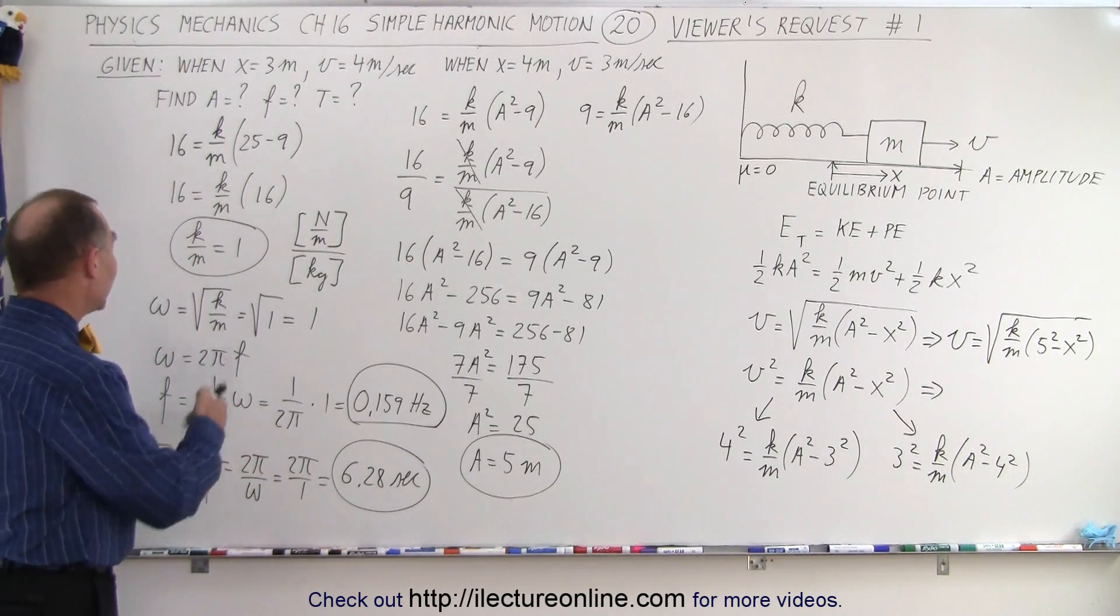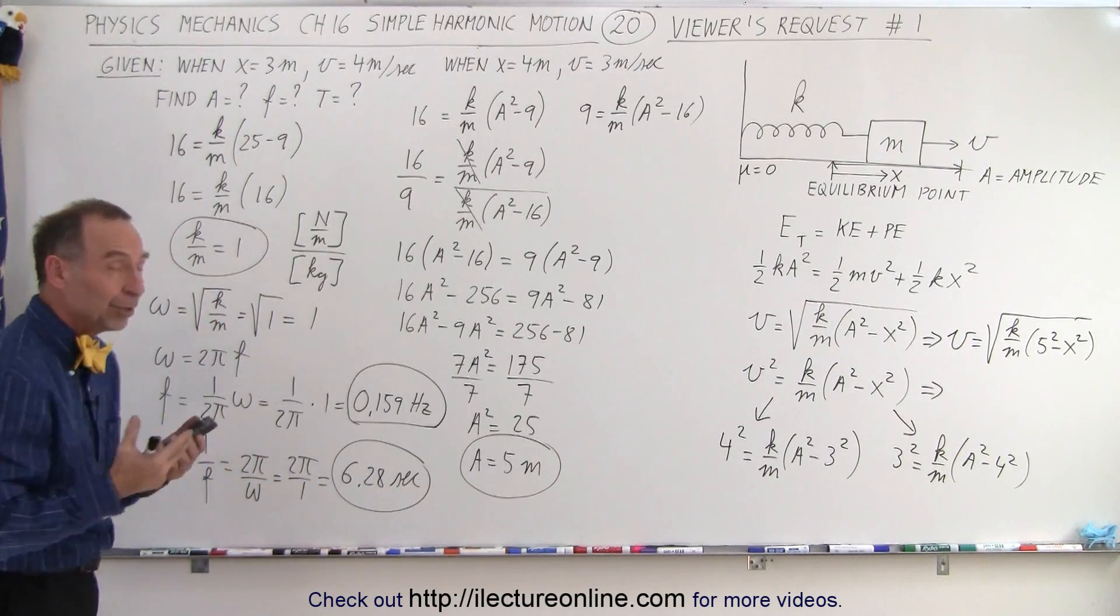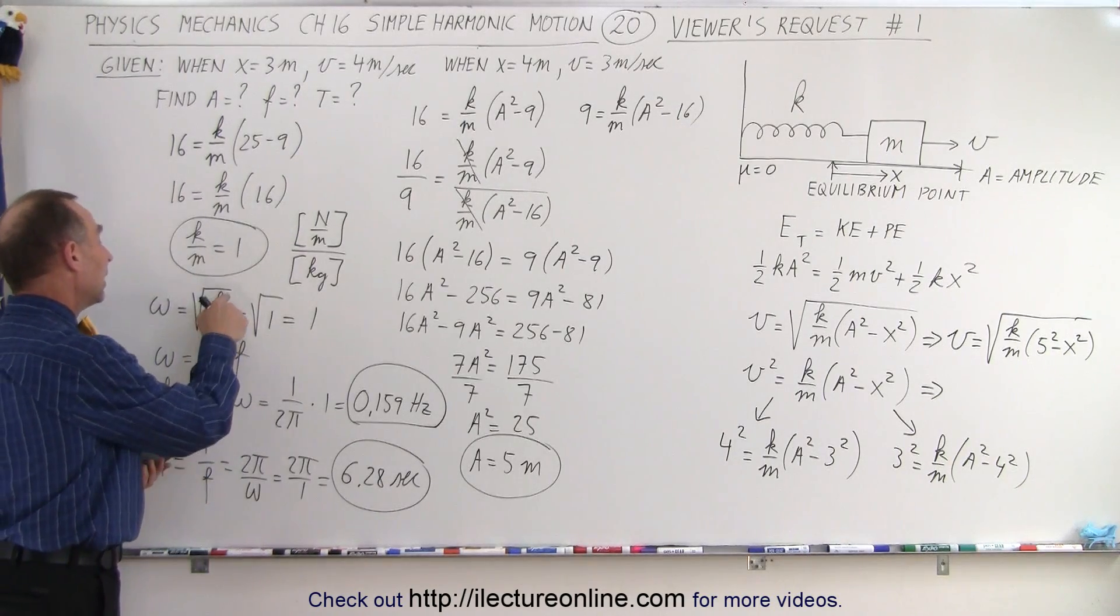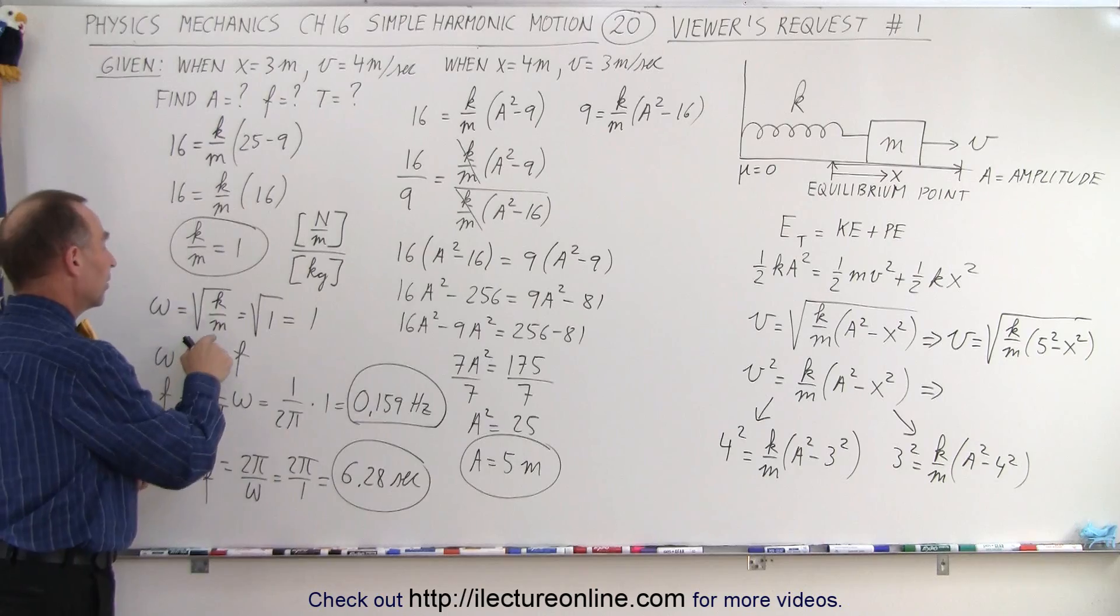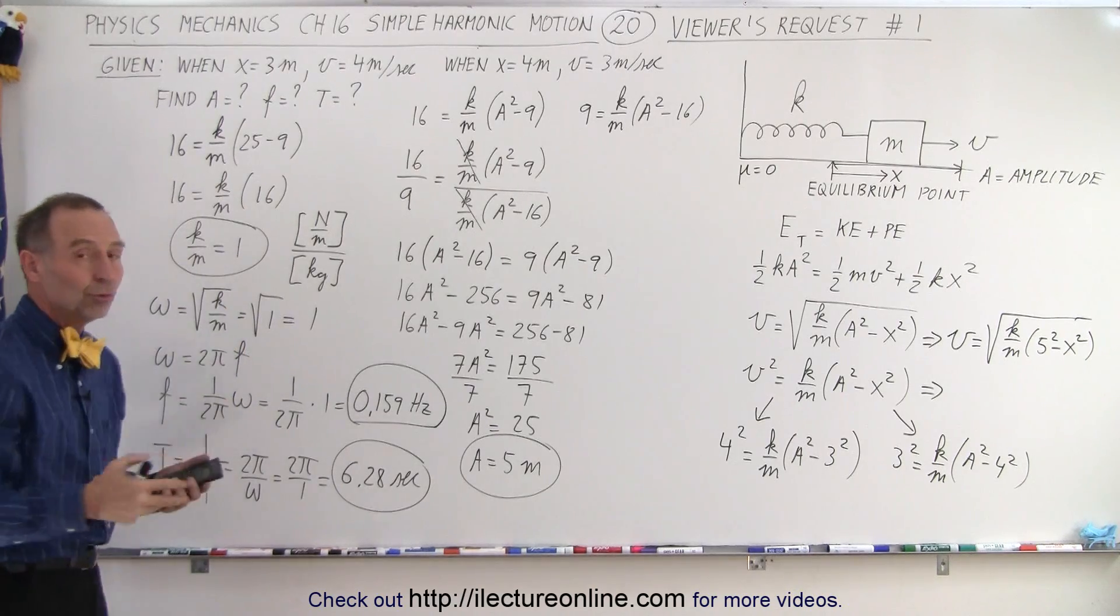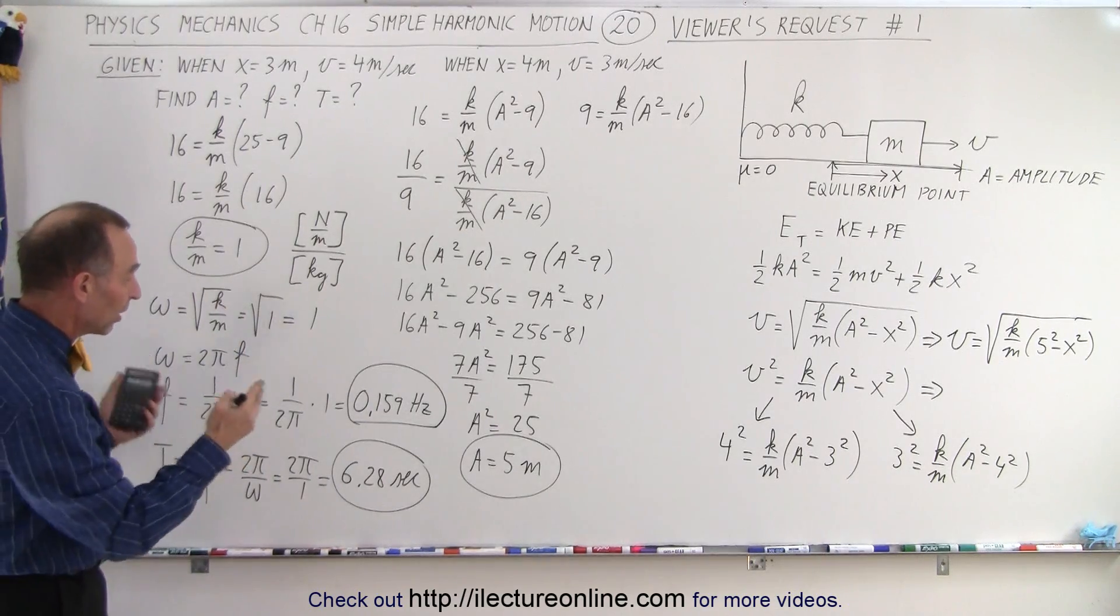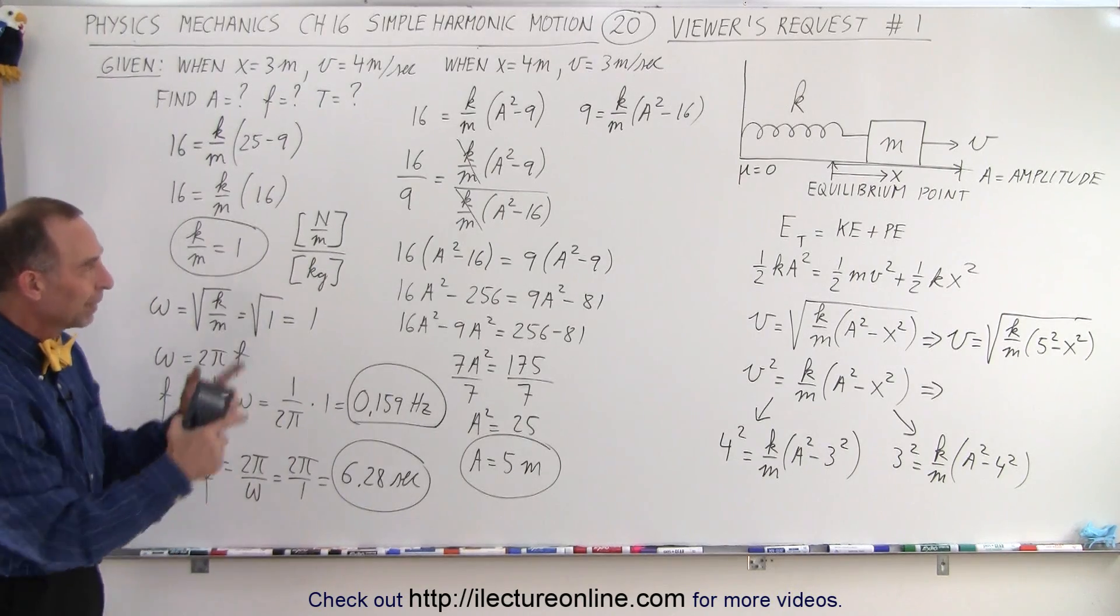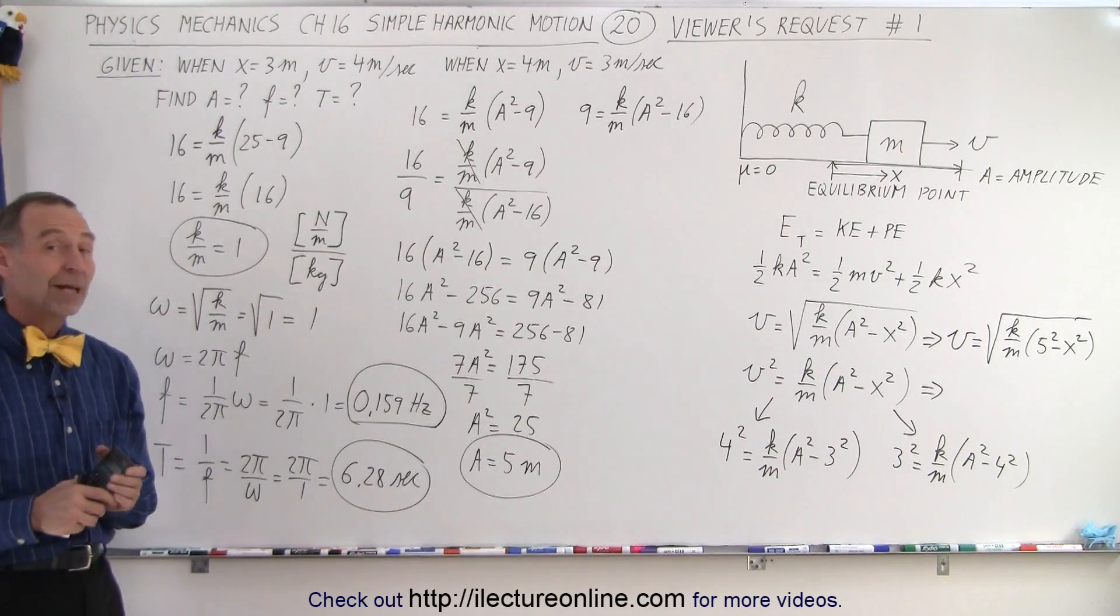The only thing we don't know is k or m, but we simply know that the ratio is equal to 1. So if m is equal to 1, then k is equal to 1 newtons per meter. If m is equal to 2, then k is equal to 2 newtons per meter, and so forth. But at least we found all the relevant information on this problem by using that simple mathematical trick. And that is how it's done.